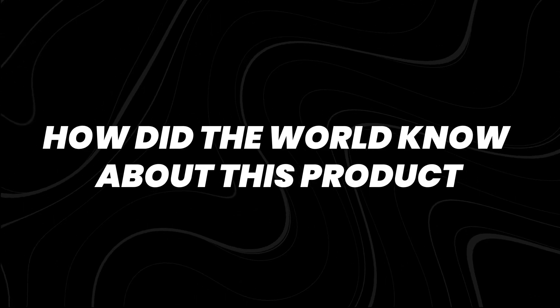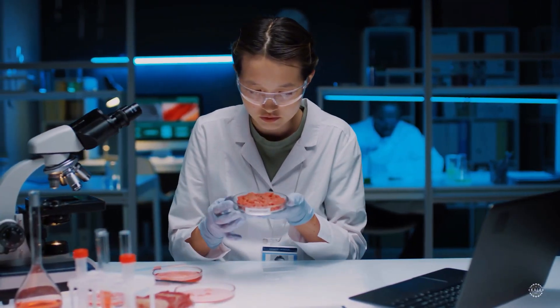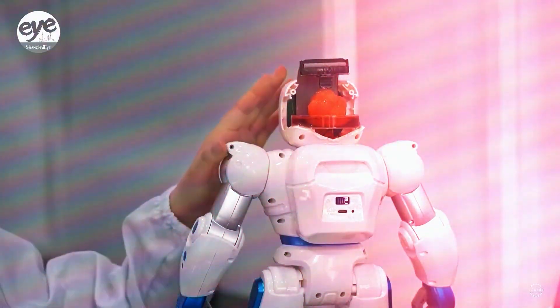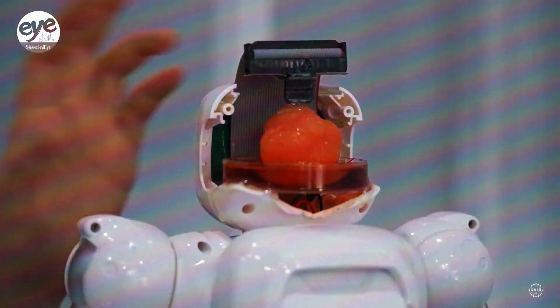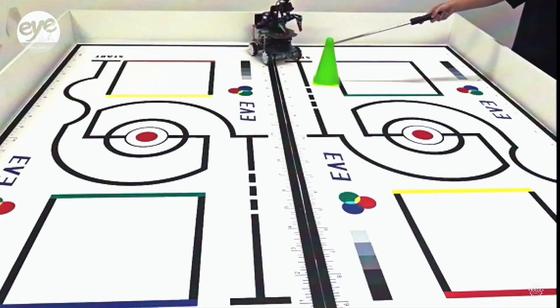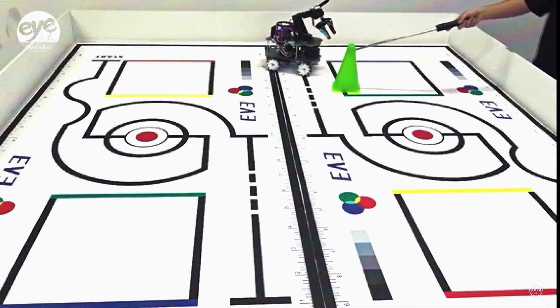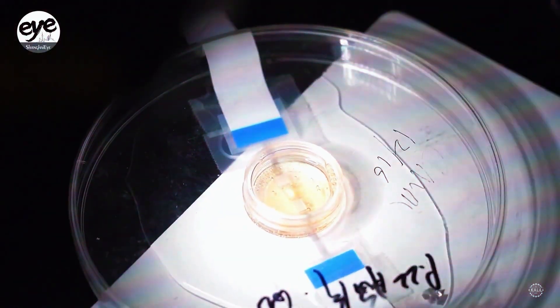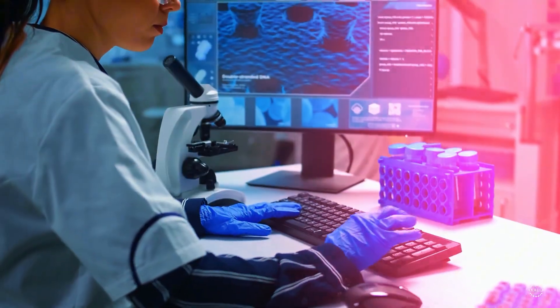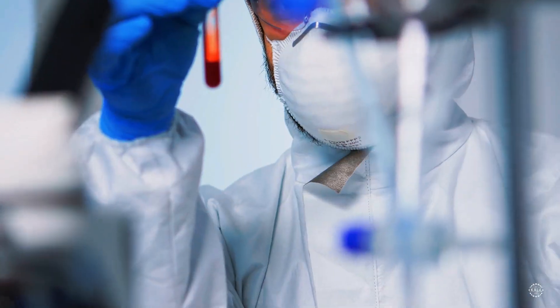Cortical Labs first gained worldwide attention in 2022, when they created a self-learning computer brain by placing 800,000 human and mouse neurons onto a chip. They then trained this living network to play a video game, showing just how powerful it could be. Science writer Las Blaine has covered their journey in developing a self-adjusting neural network that can learn, adapt, and build new pathways in response to stimuli.